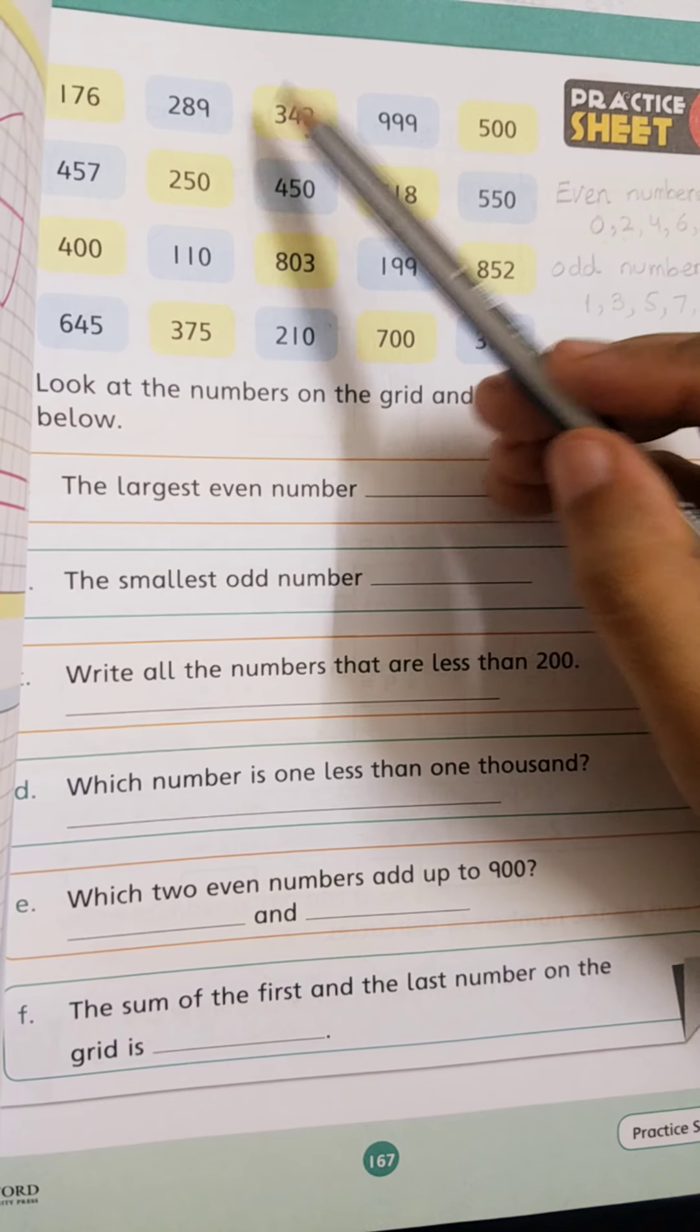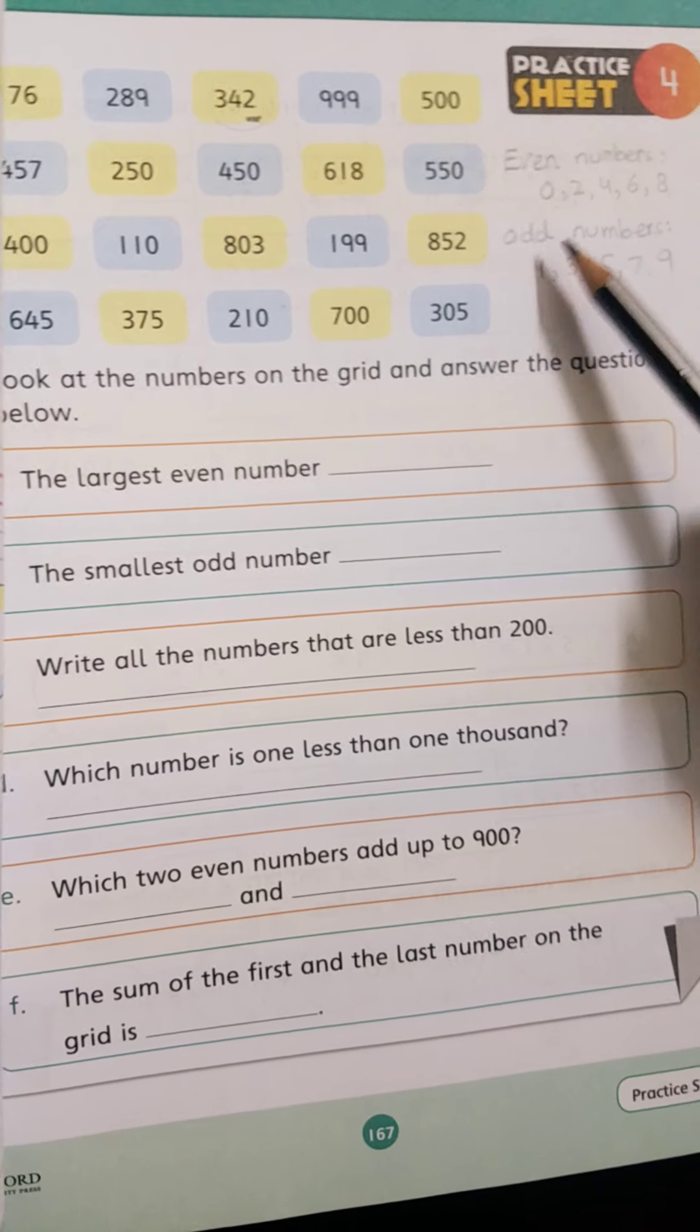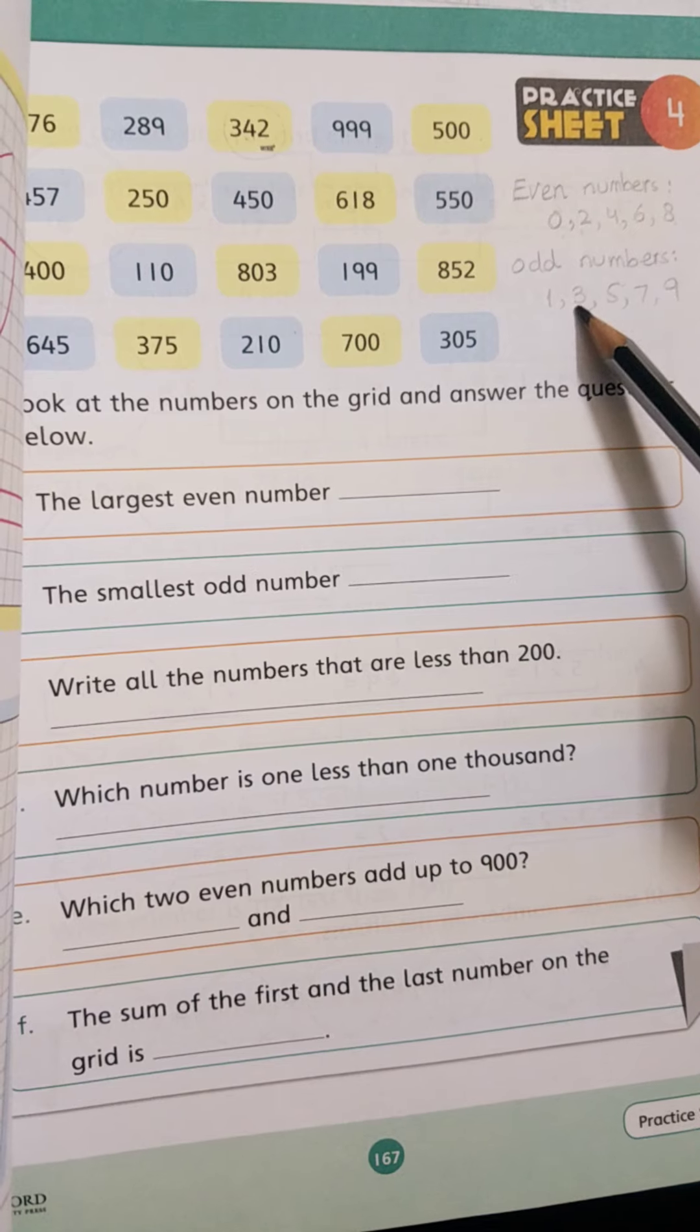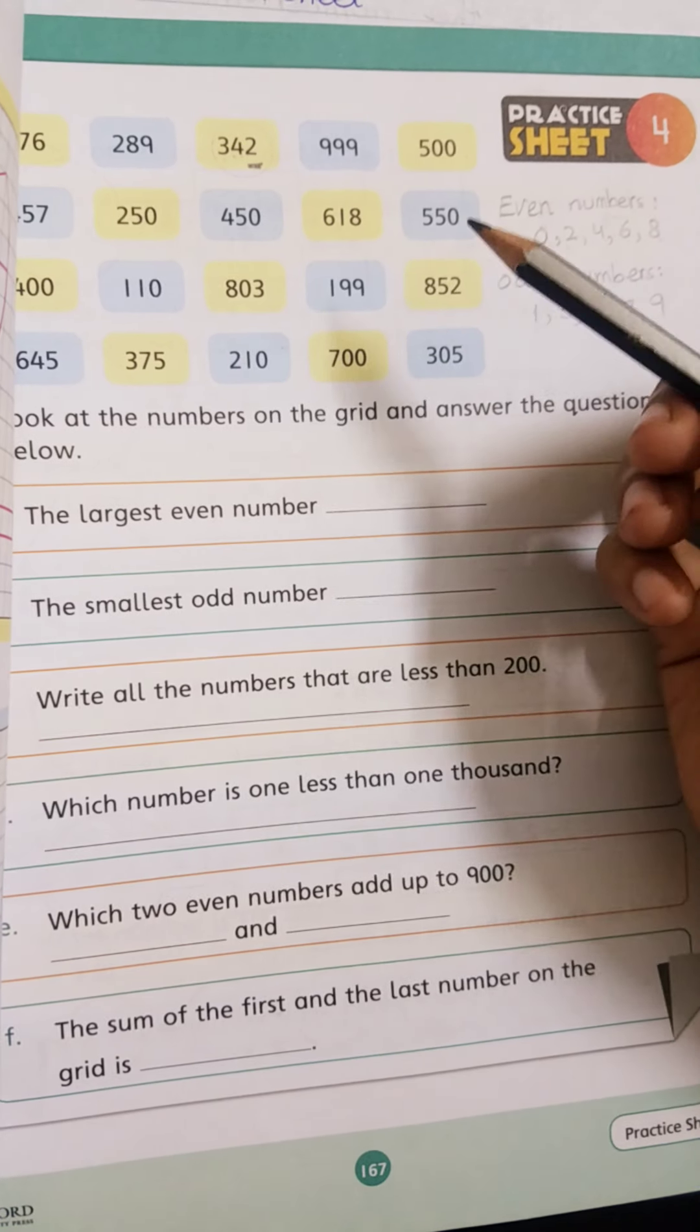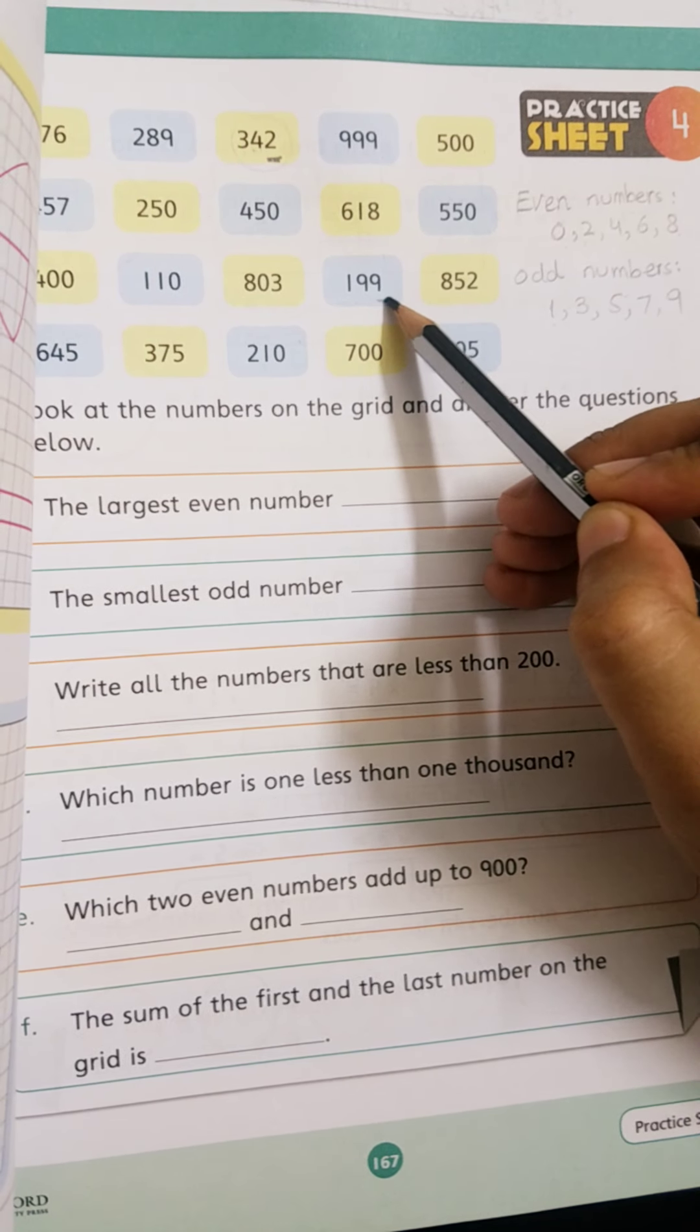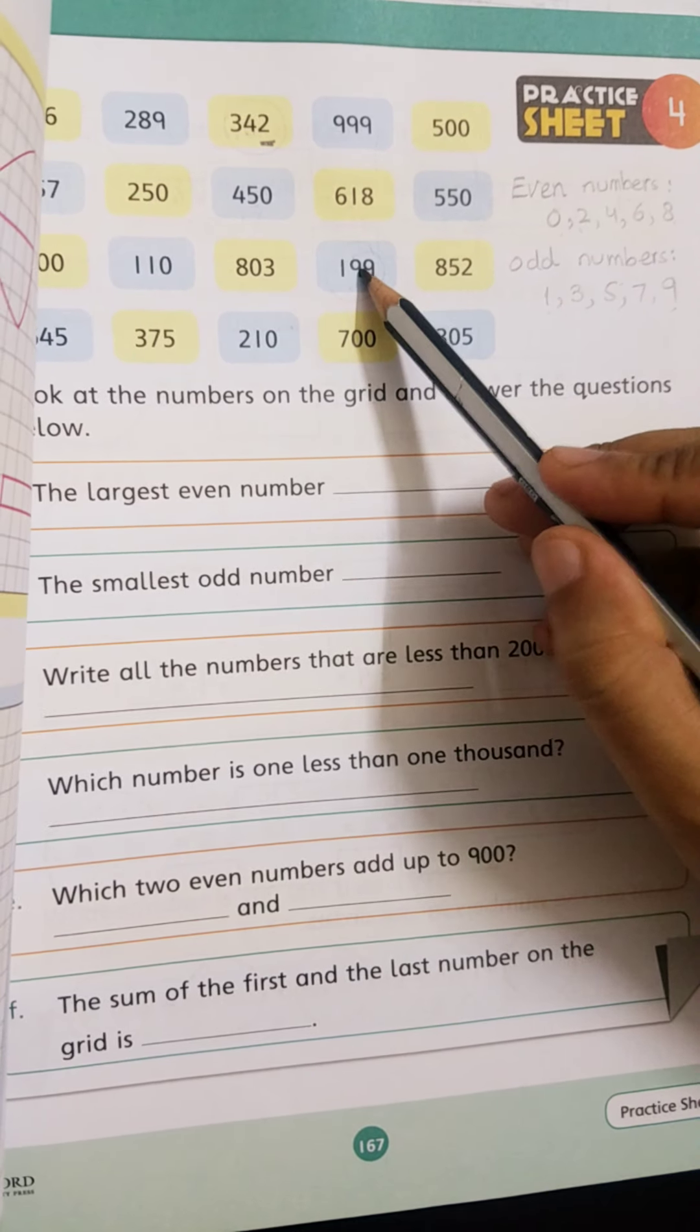Odd numbers. Odd numbers are those which end with, ones place has 1, 3, 5, 7, 9. This whole number is odd. 289, ones place has 9, so this whole number is odd.